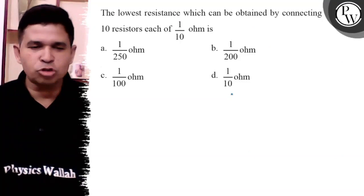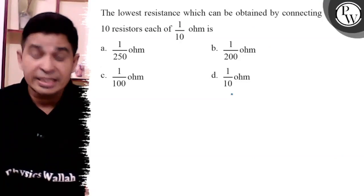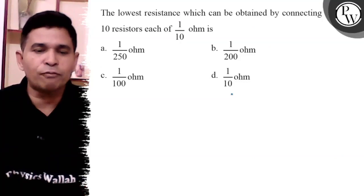Hello Bachchan, let us see this question. The lowest resistance which can be obtained by connecting 10 resistances each of 1 by 10 ohm is.